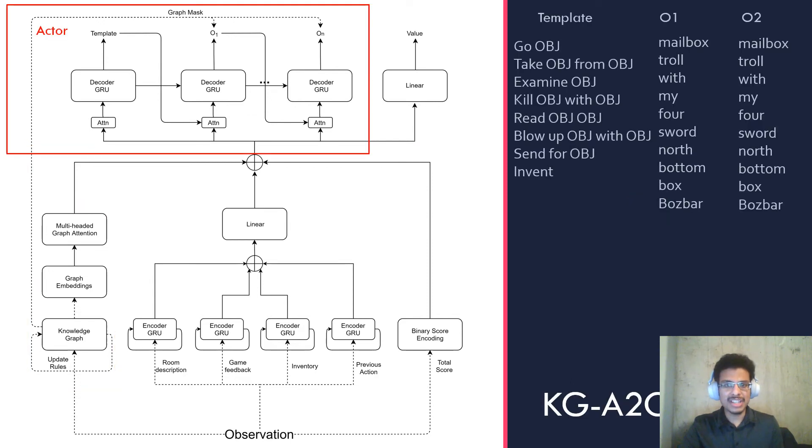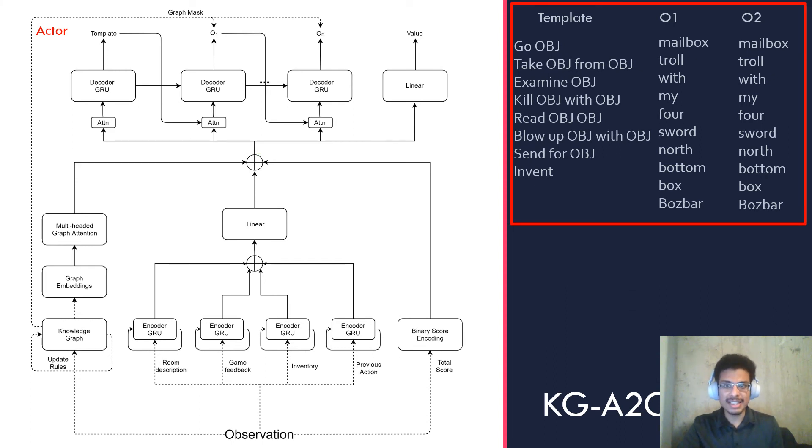The state representation is then passed into an actor that sequentially decodes a template and then N objects for each template with a GRU-based decoder. This is what the action space looks like: the set of templates and the kinds of objects you usually see. Going off the intuition that you never really interact with objects you've never seen before, we can mask out all the entities you've never seen in the graph. Once we've masked things out, what it's predicting from looks more like what you see here. The space we're generating from is now much smaller and this helps the agent explore more effectively.